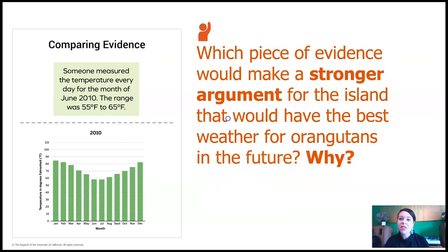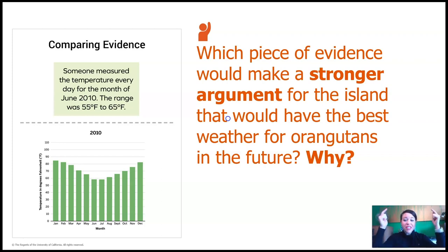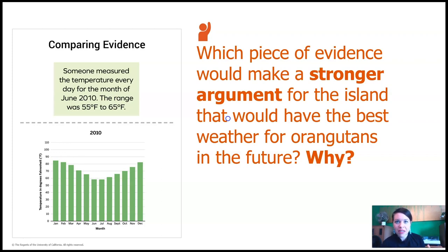Which piece of evidence would make a stronger argument for the island that would have the best weather for orangutans in the future? I'm probably going to go with the bottom piece of evidence, because if we just look at the islands in June, what if one of the islands suddenly gets freezing cold in January, or dries up with no rain for the orangutans in some month? We need to look at the entire year in order to be able to make predictions.